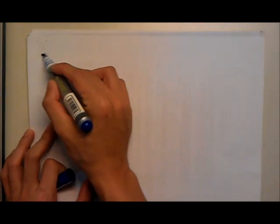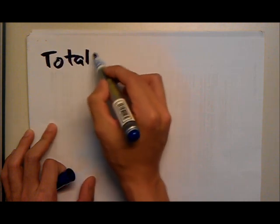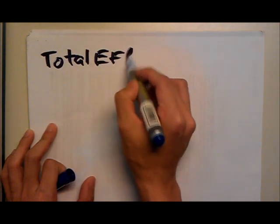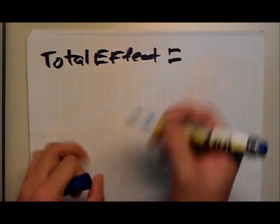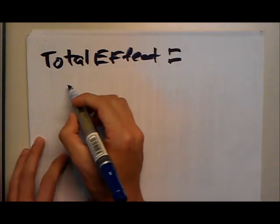Every time there is a change in price, what we expect to see from the individual is a total effect. This total effect is made up of two effects: the substitution effect as well as the income effect.